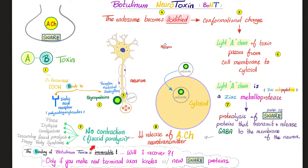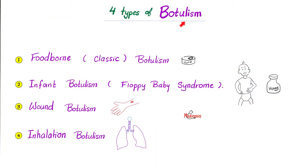No acetylcholine means no muscle contraction. You get flaccid paralysis such as ptosis, diplopia, constipation, descending bilateral symmetrical flaccid paralysis, and floppy baby syndrome, among other symptoms. We have four types of botulism — today's topic: foodborne botulism or classic botulism, infant botulism or floppy baby syndrome, wound botulism, and inhalation botulism, which can be used in biological warfare.